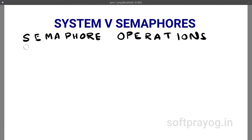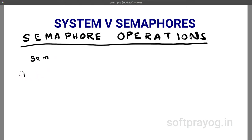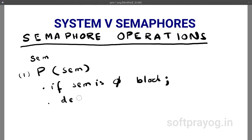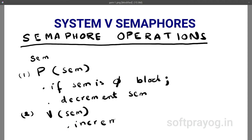There are two operations defined for semaphores. The first operation is P, which decrements the semaphore. If the semaphore is zero, P blocks until the semaphore becomes non-zero and it can be decremented. The second operation is V, which increments the semaphore by one. It is important to realize that neither P nor V can be coded as C functions in user space because the kernel can interrupt the process any time.